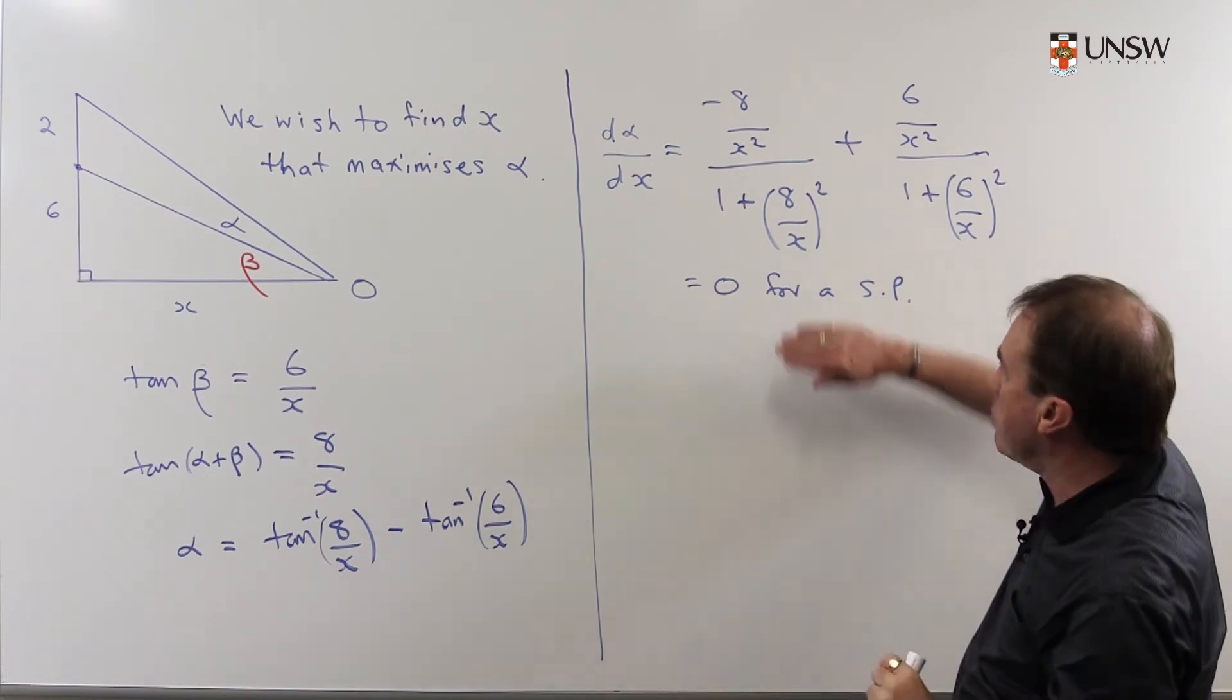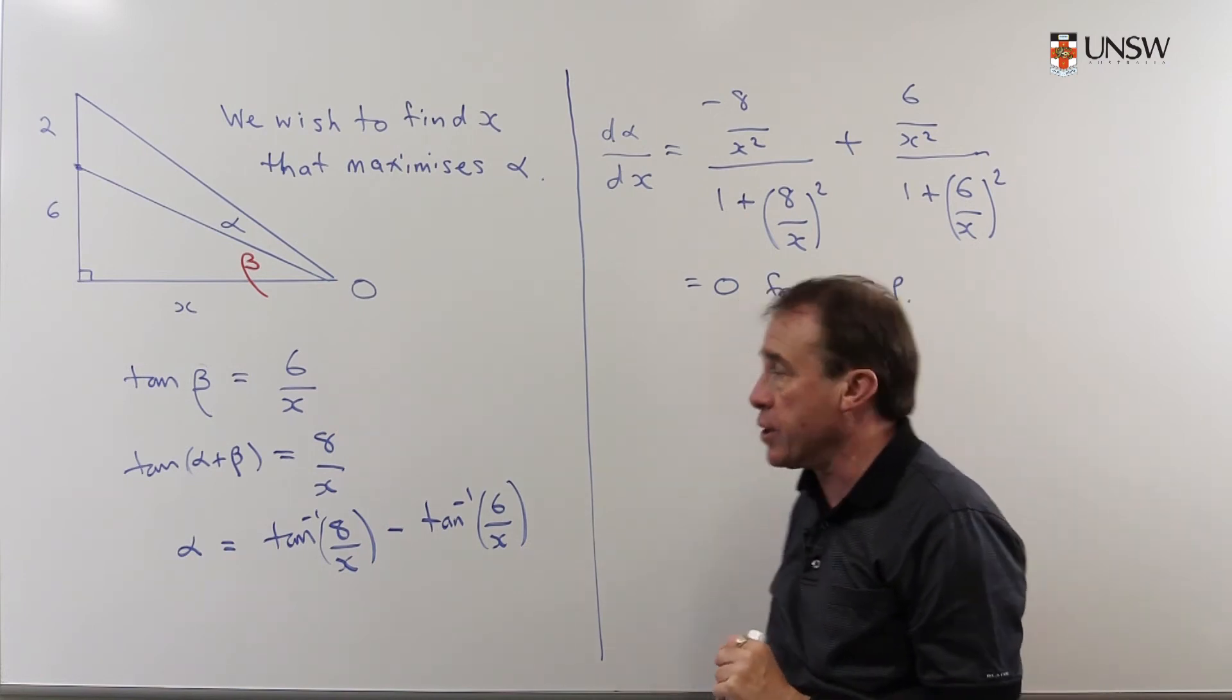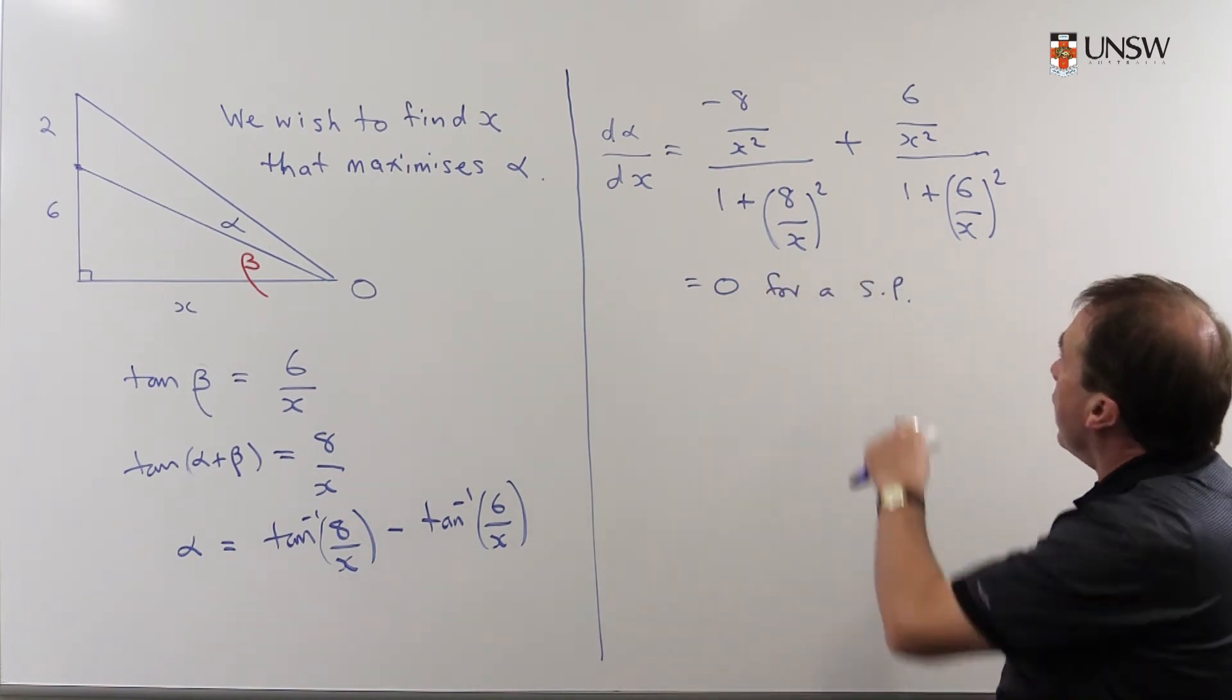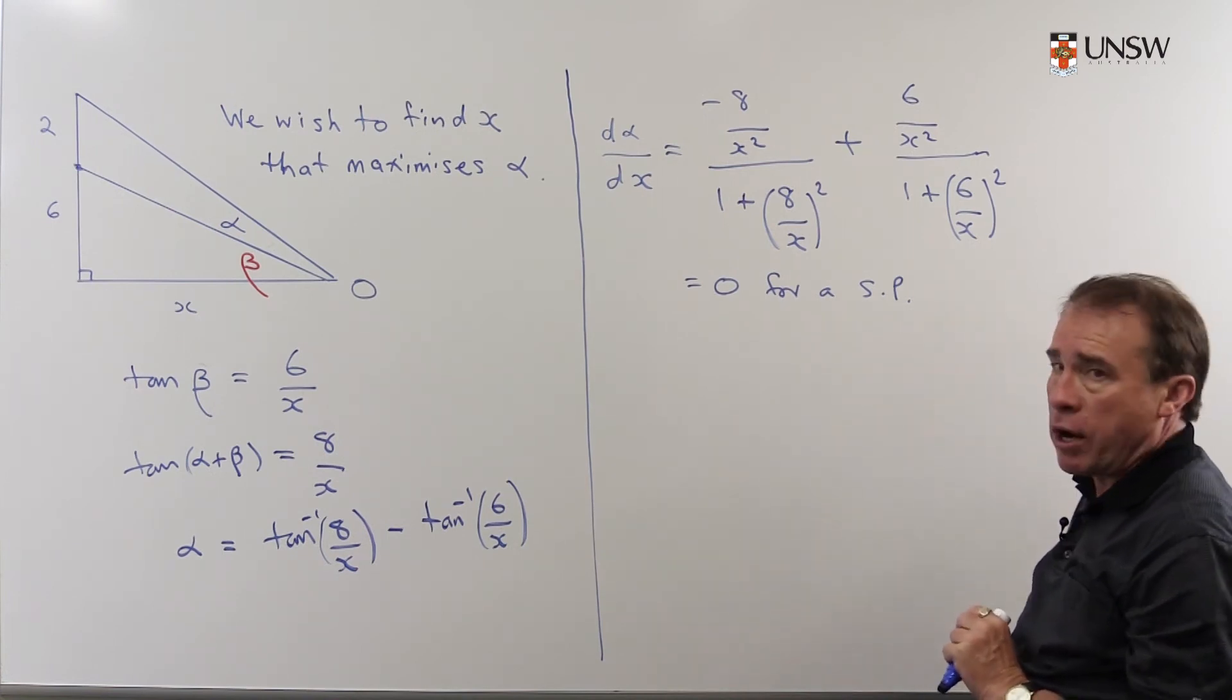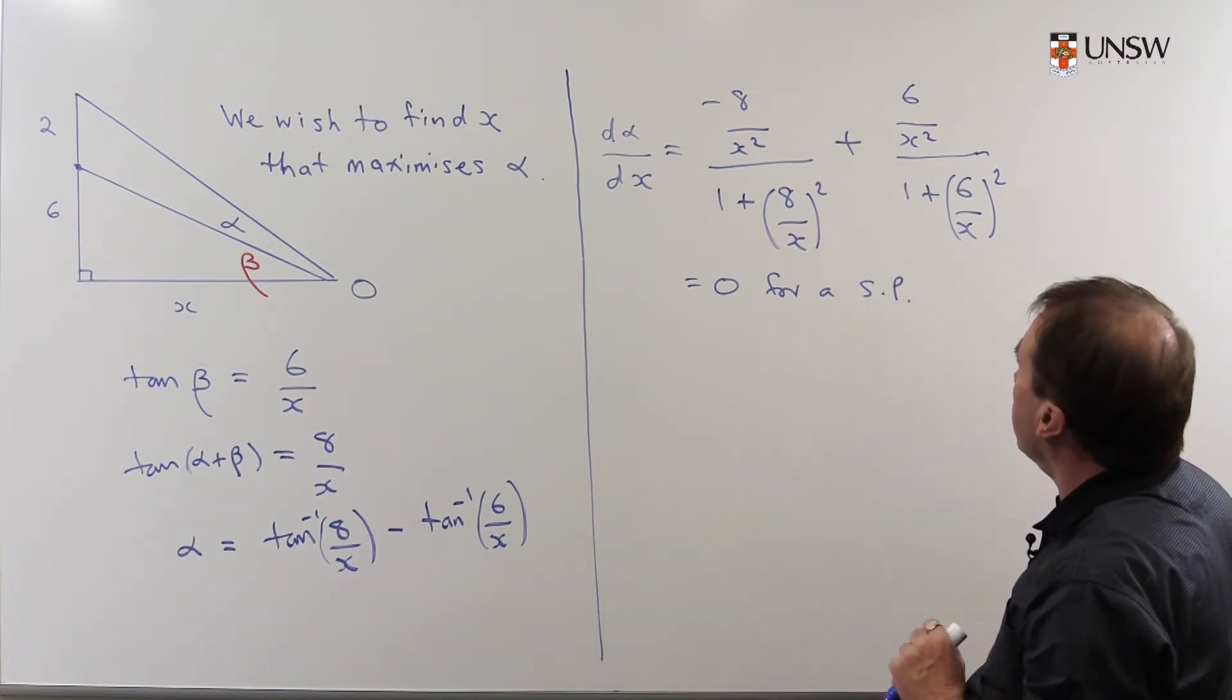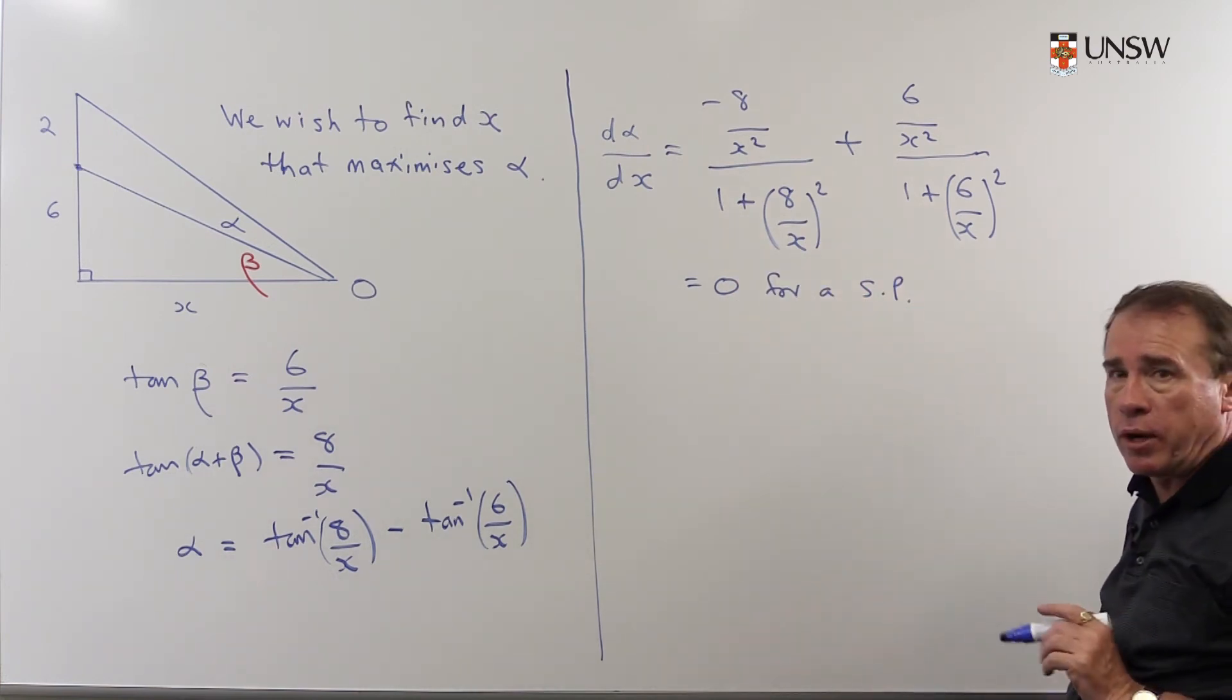Important to write the English here: this derivative doesn't equal zero, it equals zero at a stationary point. Now we get a pretty complicated looking mess, but I'm going to tidy it up a little bit. I'm going to take this term on the other side and I'm going to multiply everything through by X².